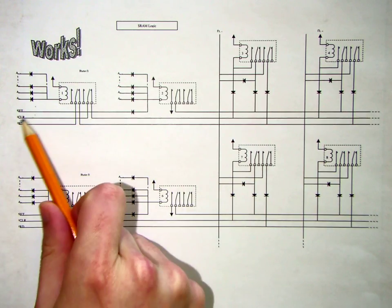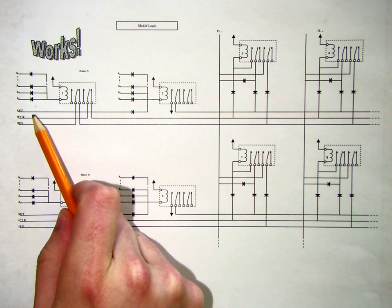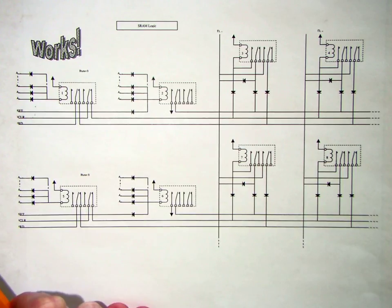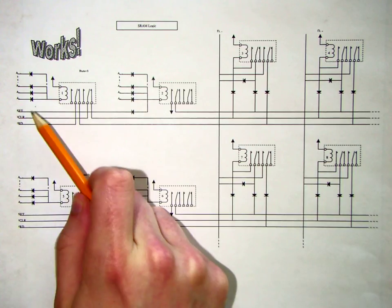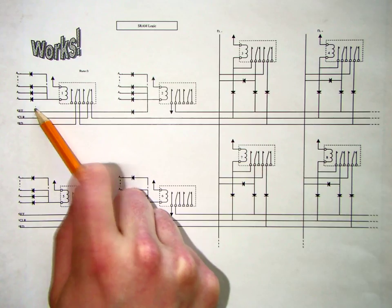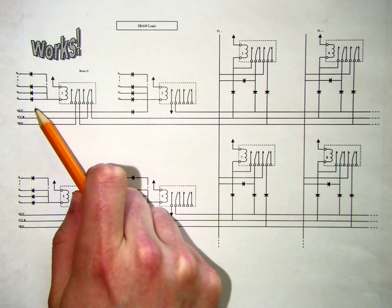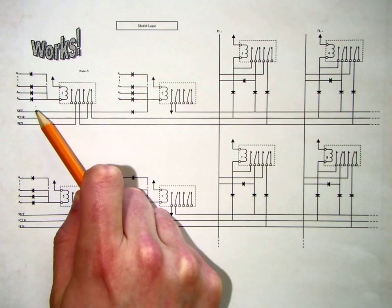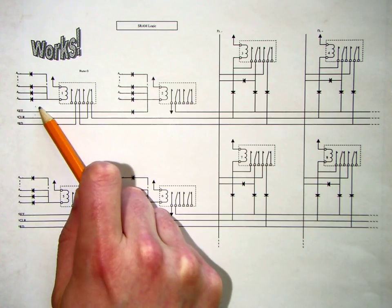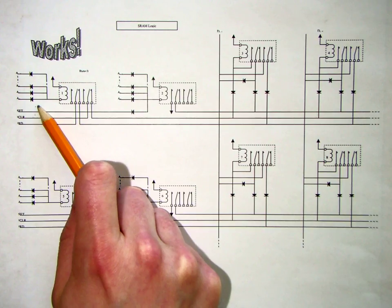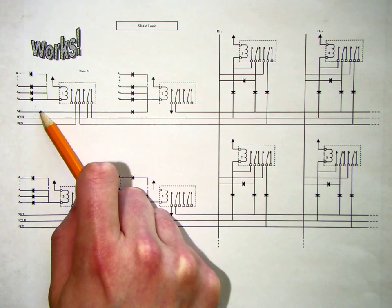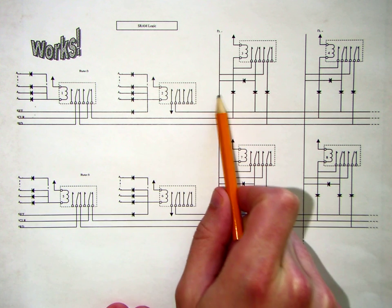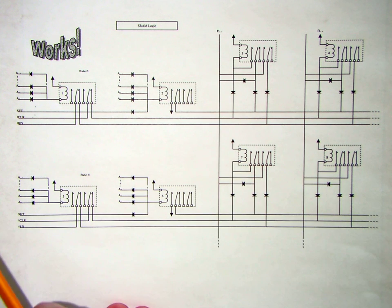The sequence to store a value in memory would be to apply the data to the data bus, apply your address to the address bus, and then sequence what would normally be a low on the set and a high on the clear. We would need to first drive clear low and then drive it high, then drive set high and then bring set low. At that point, whatever data was present on the data bus will be stored in the relays. To read from a memory location, all we need to do is set up our address locations and drive our read signal low.